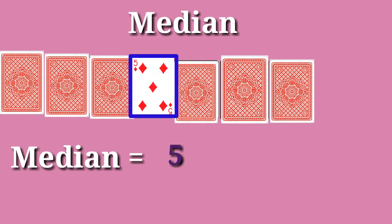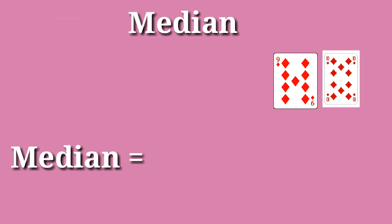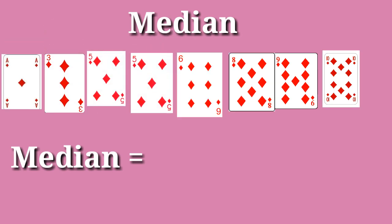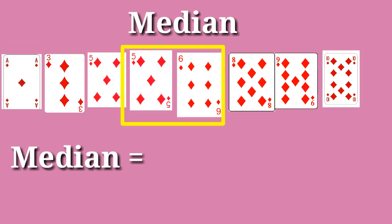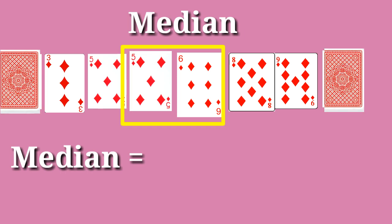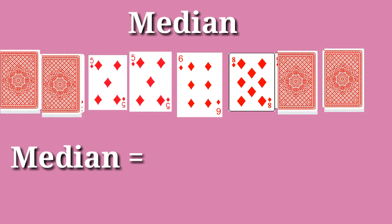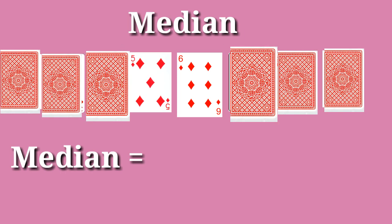I added another card, number 6. Now in the median place there are two cards, 5 and 6. So this time we take the average of these two numbers: 5 plus 6 divided by 2 equals 11 divided by 2, that's equal to 5.5.